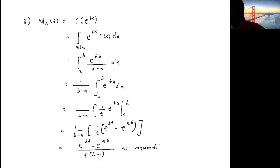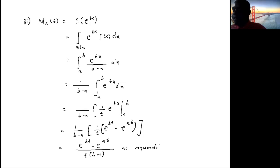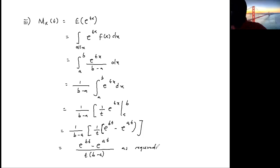You have now verified the PDF and derived the expectation, variance, and moment generating function for the uniform distribution. You must be able to derive them in case they are asked in any assessment. I hope you enjoyed it — please share with your friends, remember to subscribe, and always like. Thank you for watching.